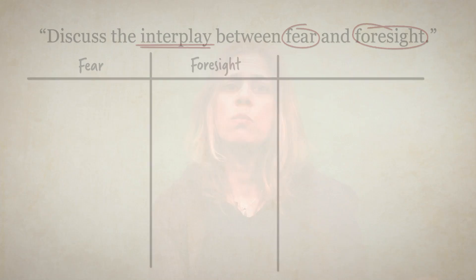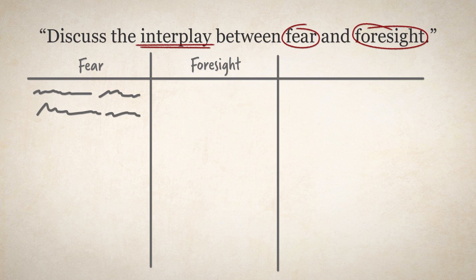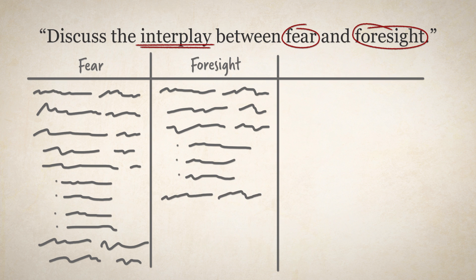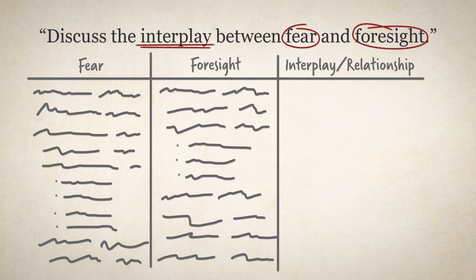All 'interplay' means — and you're going to use your dictionary — is relationship. The relationship between fear and foresight. So column one is going to have fear, with all your ideas about what fear means: synonyms, questions, experiences. Column two is going to be foresight, a more complicated word — foresight means the ability to see into the future, to predict and plan. All of those ideas go in column two. In the third column, you're going to have the word 'interplay' — the verb of the sentence — and you might synonym it out to 'relationship' if that makes more sense to you.